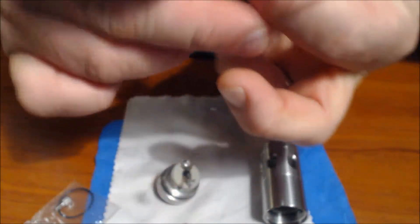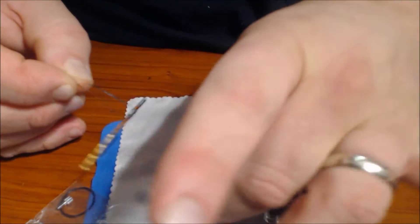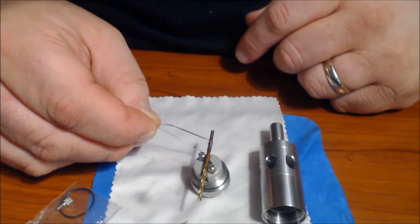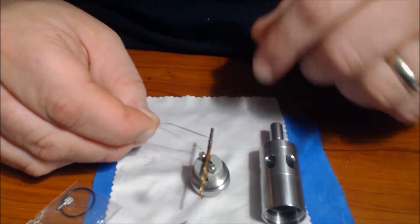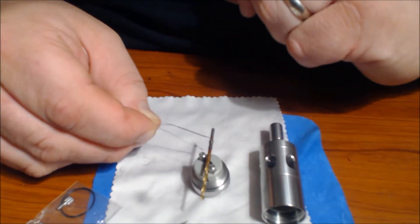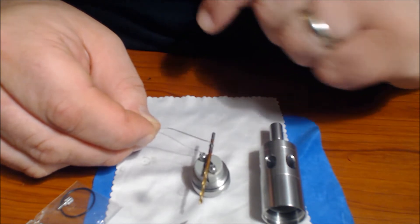And then, the next step is what I did was I put it in the middle of the Addy deck. Just like so. And I screwed the legs down one under each of the posts. And that was my coil.